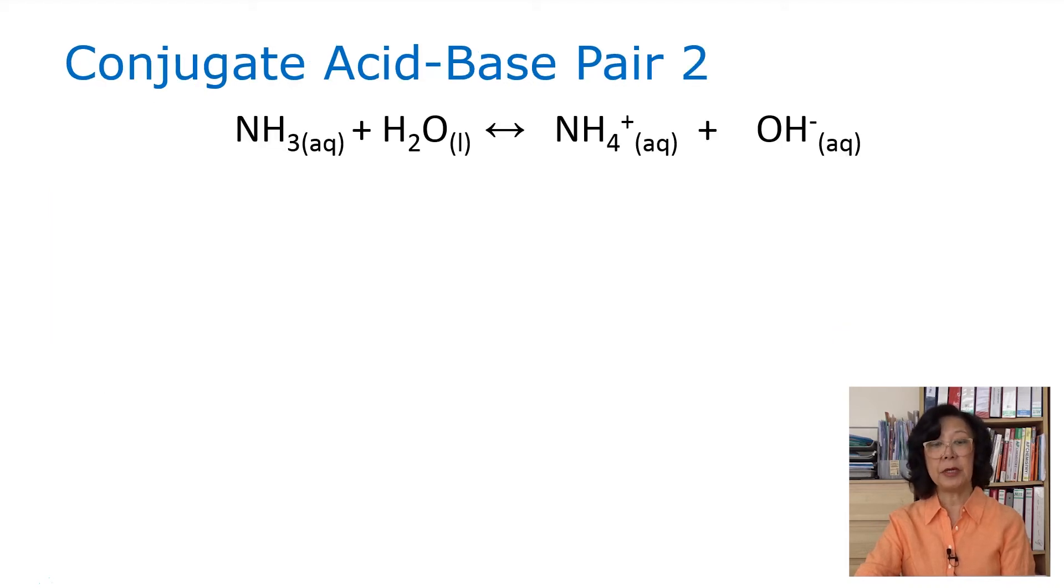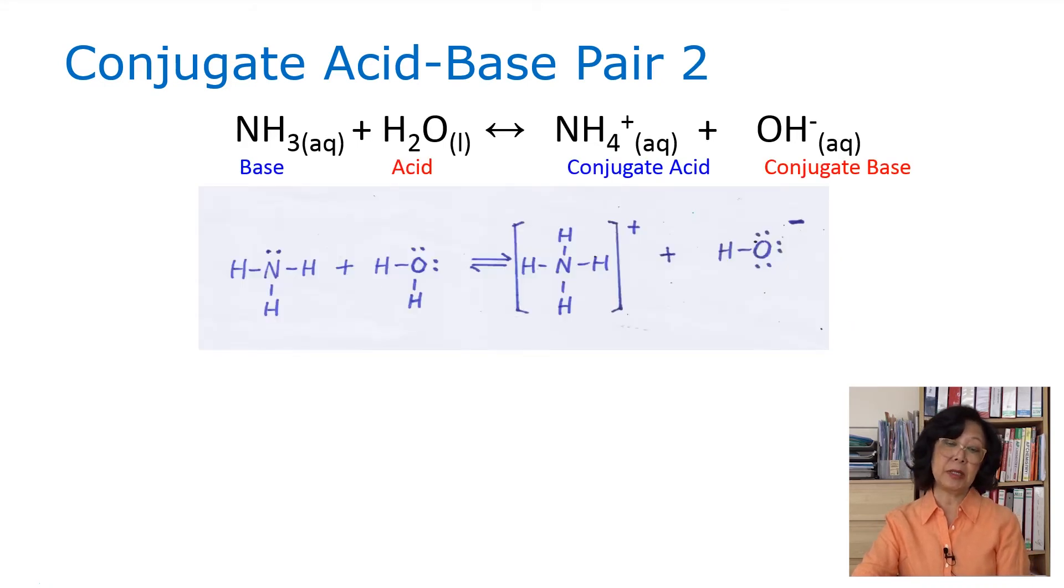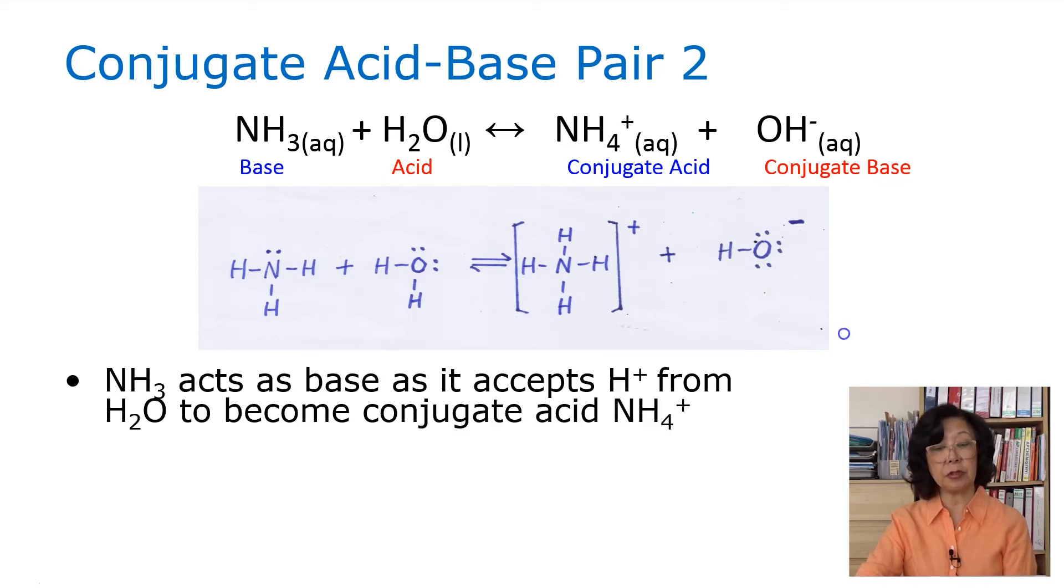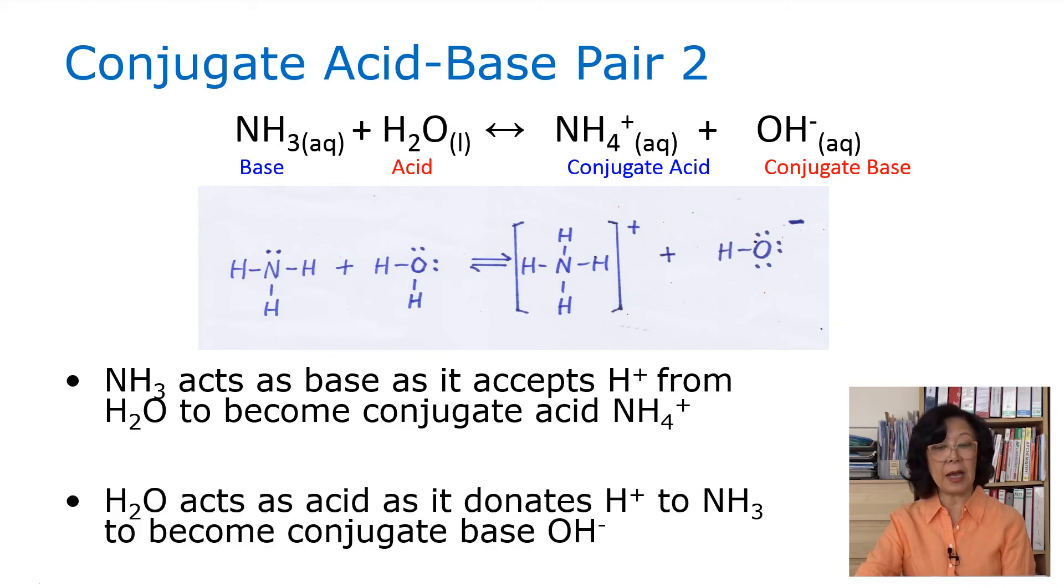Another example: ammonia in water forming ammonium and hydroxide ion. Here is the diagram of ammonia with a lone pair of electrons. It is accepting the proton from the water, so it is the base, and then it forms the ammonium ion, which is the conjugate acid. Water is now acting as an acid as it's donating the proton to NH3 to become the conjugate base OH-. Again, when you draw the Lewis diagram, please make sure that you have all the dots and bonds accounted for, and the charges of the ions.